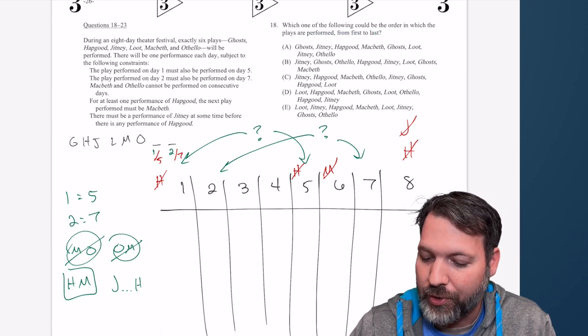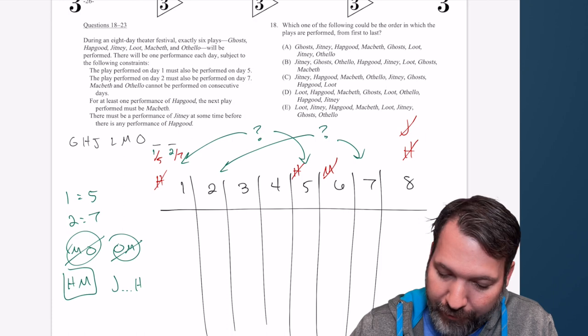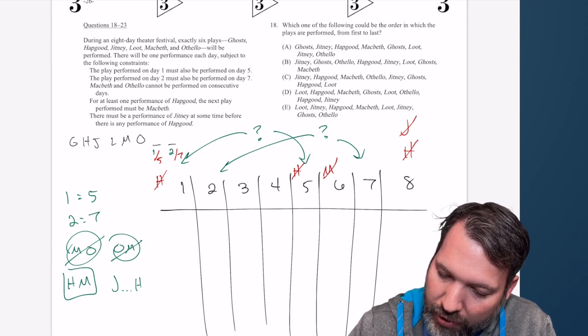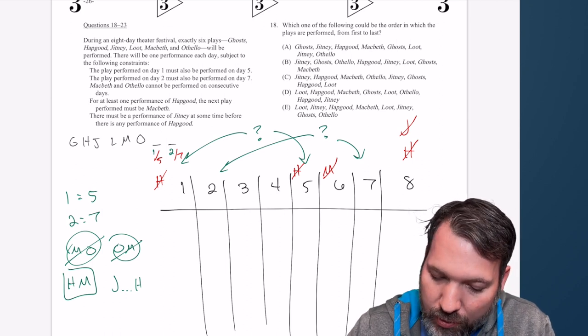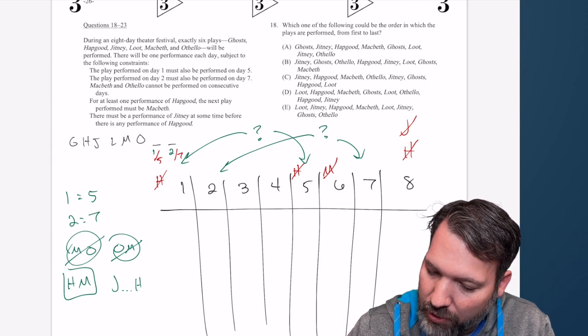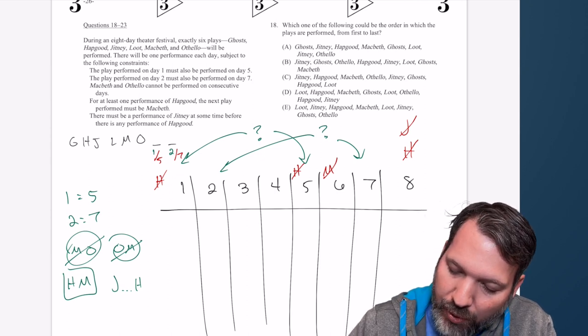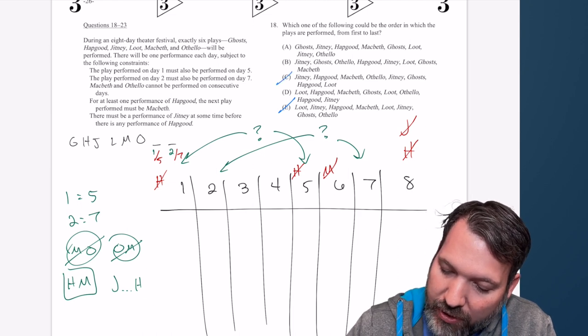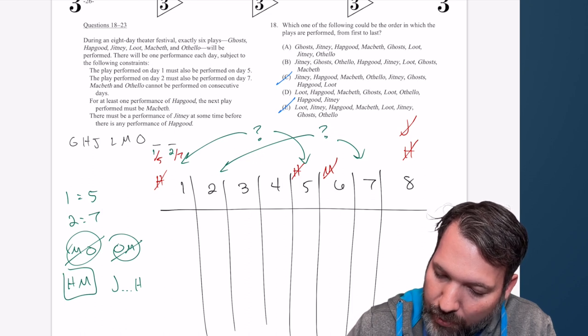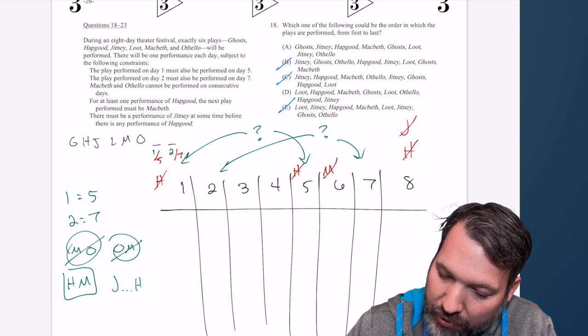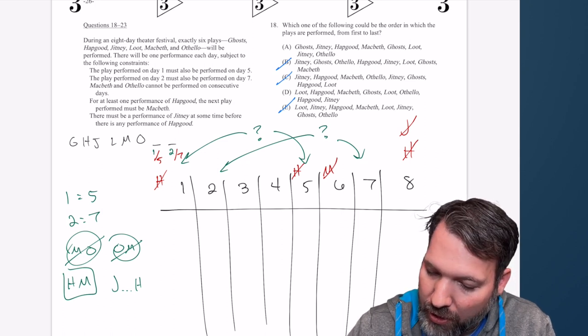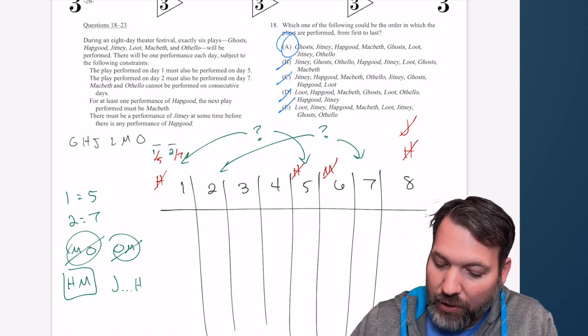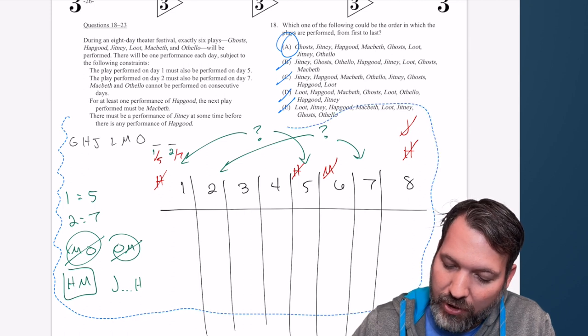I do see that classic pick a clue style question for number 18. Which one of the following could be the order in which the plays are performed first to last? So first of all, we know one equals five. So one equals five. A looks good, B looks good, C looks good, D looks good, E looks good. So for one equals five, we're good. Two equals seven. A looks good, B looks good, C looks good, D looks good. But E, two equals seven, right? E is no good. M and O can never be consecutive. Answer choice C is no good. We've got M and then O. H has to come before M at least once. B is no good because I only see H appearing once and it's not before M. A and D both look good. J must occur before H. So D is no good. H is occurring too early. And so number 18 must be A. This is the beauty of a pick a clue. Kind of gets you into the scenario right off the bat. And there we have it.